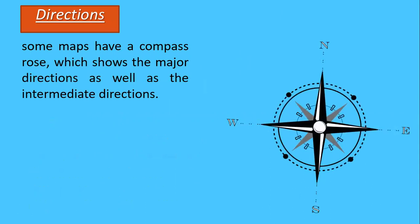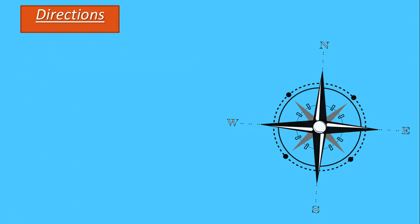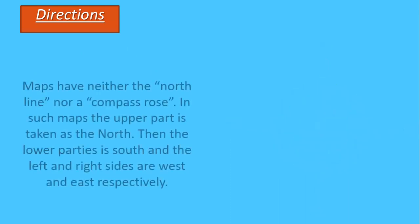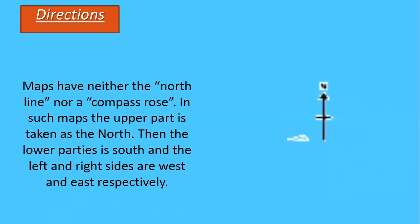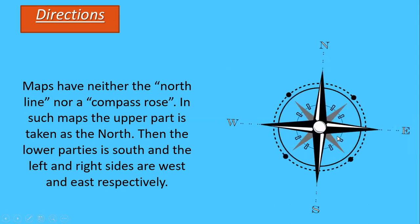Next, we look at the symbols used in the map. Some maps show a compass rose, which shows the major directions as well as intermediate directions. On the compass shown on the right side of the screen, you can see north, south, east, west, and intermediate directions also shown with dots. Either a north direction line or this compass rose is shown in a map, and it normally appears on the upper part of the map.